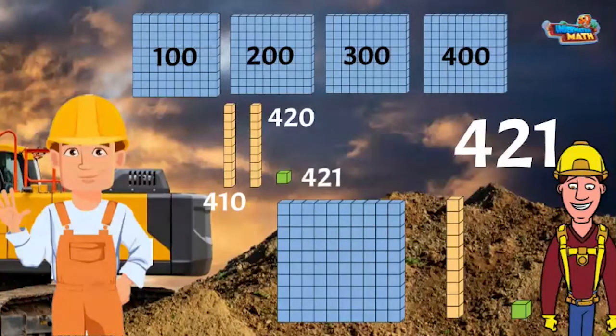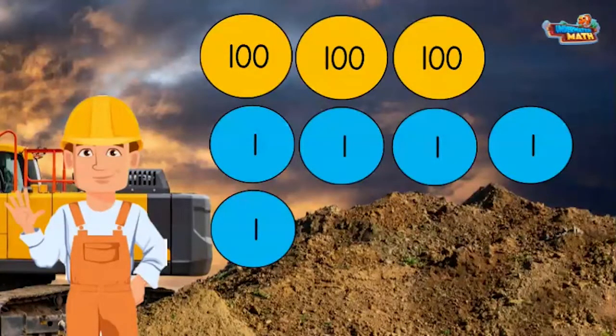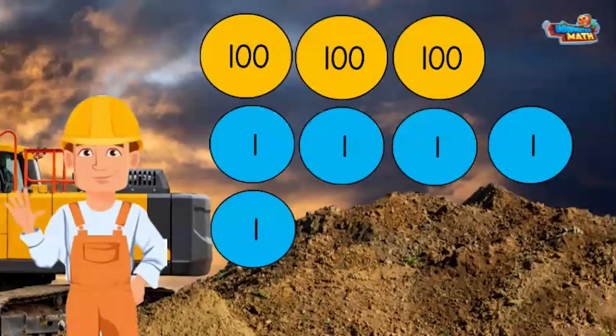Move to the circles and fill this order. I need three 100 circles and five 1 circles. Got it. Each circle tells us its value and we add the values together to get our total. We have 300 plus 5, that gives us 305.